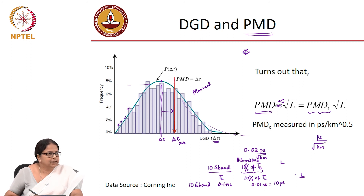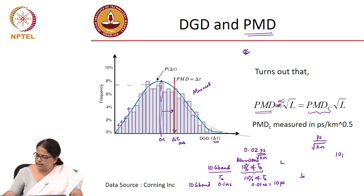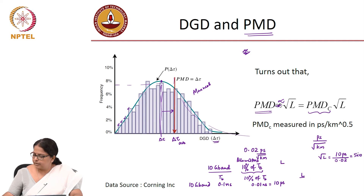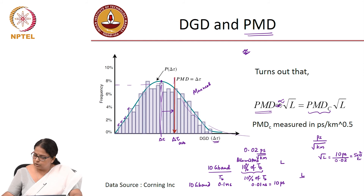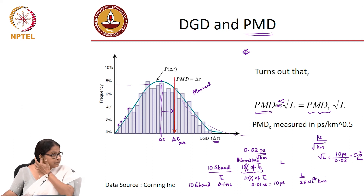To find the length: PMD = PMD_coefficient × sqrt(L), so sqrt(L) = 10 ps / 0.02 = 500, giving L = 250,000 kilometers. With a PMD coefficient of 0.02 ps/sqrt(km), you do not really have to worry about PMD at all for any practical transmission distance.